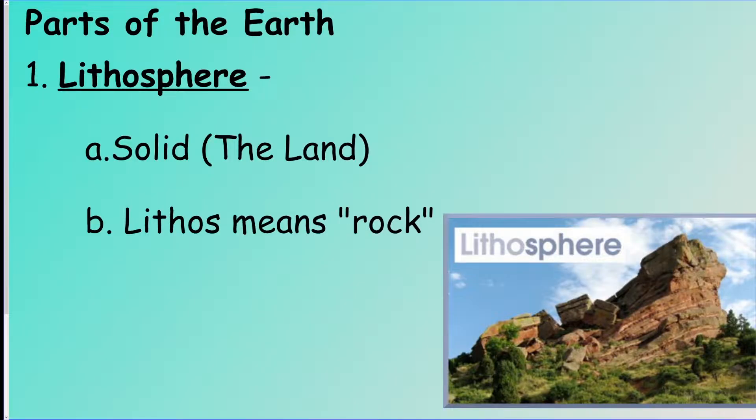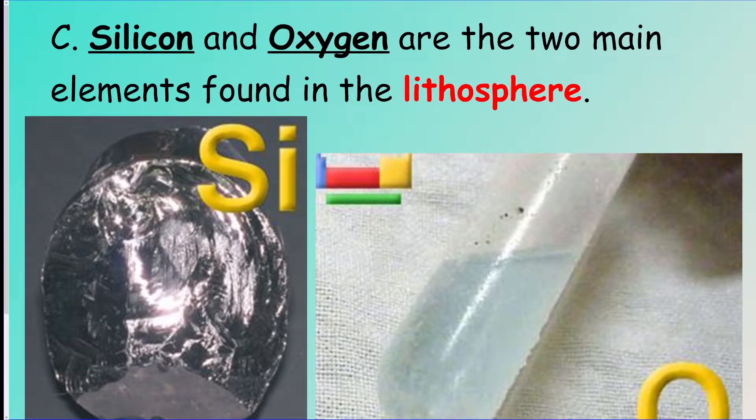The first sphere of the Earth that we're going to talk about is the lithosphere. This is a fancy name for the land on the Earth, so all the continents, anything you can walk on. The lithosphere is solid, and that makes sense because you can walk on it. The two main elements that are in the lithosphere, if you were to start breaking up most of the rock on the planet, is going to be mostly silicon and oxygen, which are two elements on the periodic table.